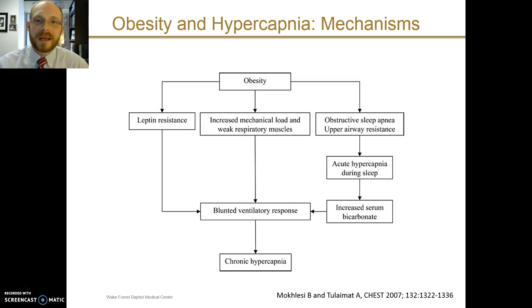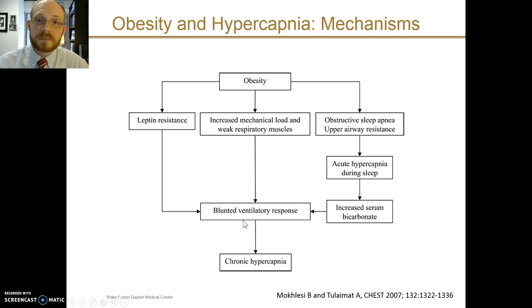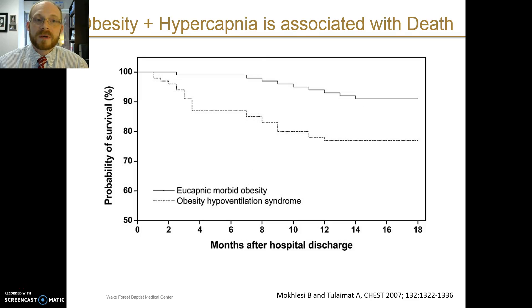Let's shift gears and talk about hypercapnia. Obesity can cause hypercapnia through a few different mechanisms: obesity causes a resistance to leptin, it causes an increased mechanical load and can weaken respiratory muscles over time, and obesity is a major risk factor for obstructive sleep apnea. These three things together can all lead to a blunted ventilatory response and the presence of chronic hypercapnia. Chronic hypercapnia is not a good thing. This graph shows that obese patients who also have hypercapnia are significantly more likely to be dead after a hospitalization when followed over time — the probability of survival is significantly different between those with obesity who are eucapnic and those with obesity hypoventilation syndrome.